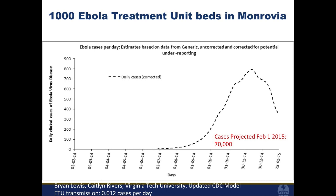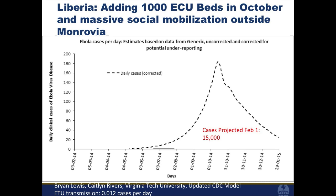There is also analytic support for the community approach. A group — Brian Lewis and Caitlin Rivers at Virginia Tech, collaborators of ours — took the CDC models, updated them, and modeled different strategies. The U.S. strategy of bringing in lots of hospital beds shows one epidemic curve and a projection into February. But when you model adding a massive social mobilization and the community care center strategy to the beds, you get a lower projection. So there is modeling support for this type of approach, in addition to rationales from experience itself.